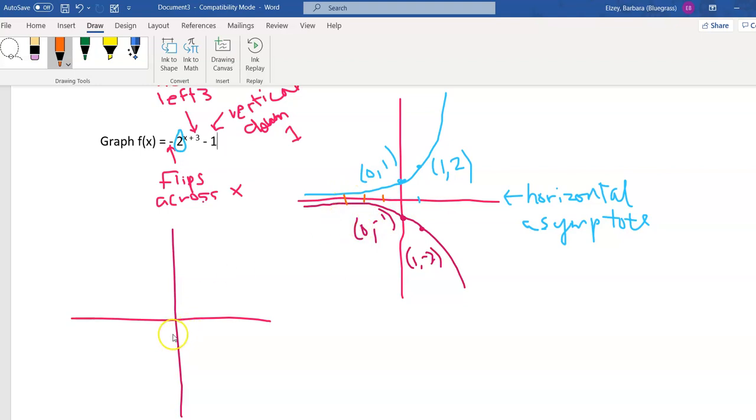So negative 3, negative 1 is where the point will be now. Now, this point, 1, negative 2, if I move it 3 places to the left, it's going to be at negative 2, negative 2. So negative 2, negative 2 puts it right there. Again, it's not going to cross that horizontal asymptote. So I'm just going to draw that same shape like that. We don't want it to cross the x-axis.